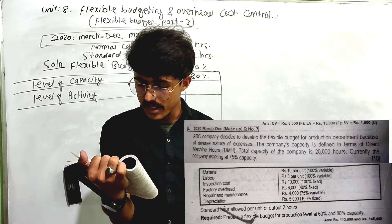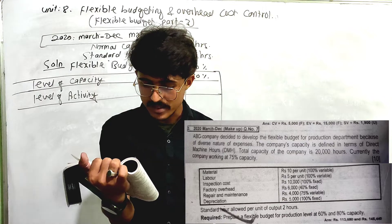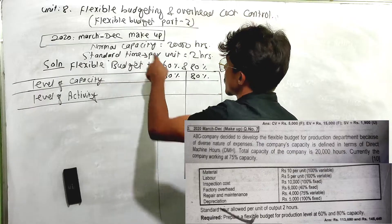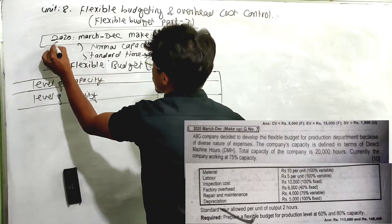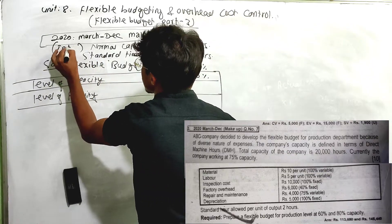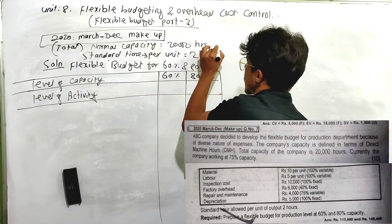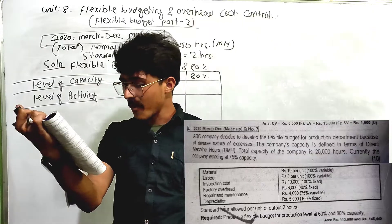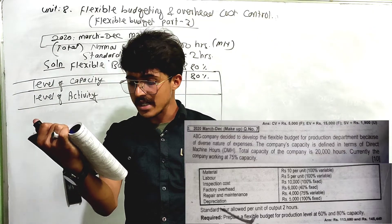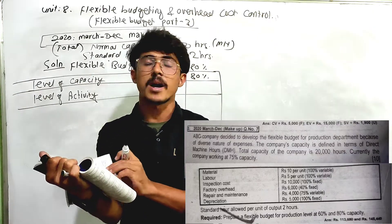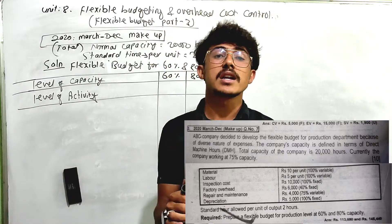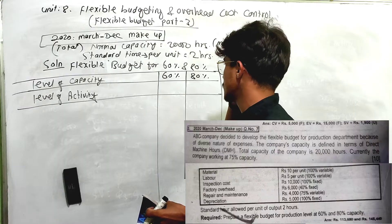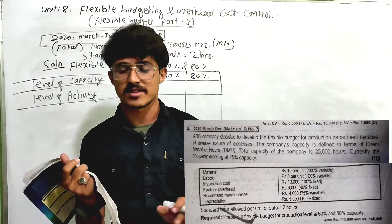The company's capacity is defined in terms of direct machine hours. The total capacity of the company is 20,000 hours. The company is currently working at 75% capacity.